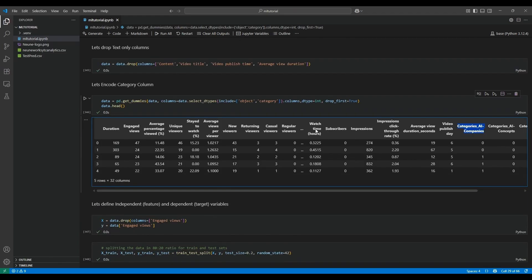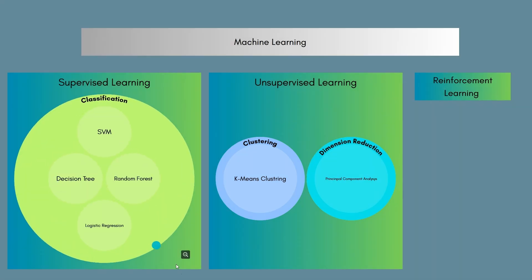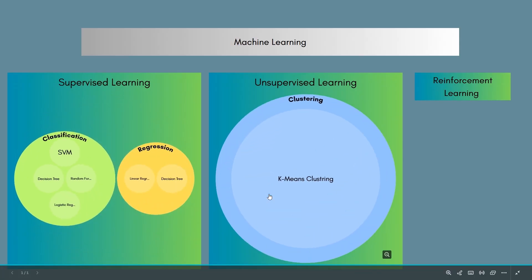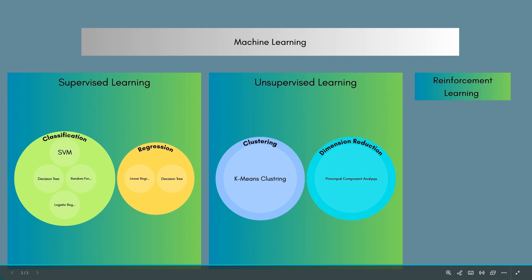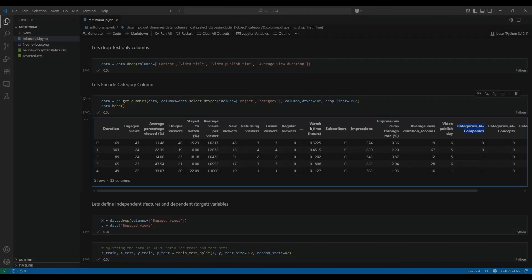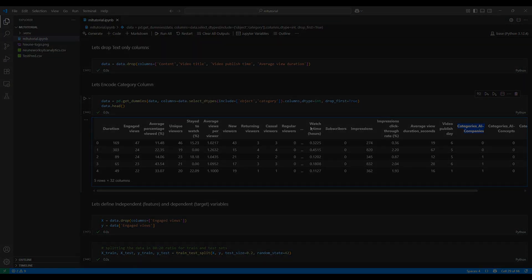Now we are almost done with our data — it's time to choose our model. There are various models in machine learning. On a high level, it is divided into supervised, unsupervised, and reinforcement learning. Supervised learning is further divided into classification and regression. In classification there are models like decision tree, logistic regression, support vector machine, and bagging/boosting models such as random forest, gradient boosting, and XGBoost. In unsupervised learning we have clustering like k-means, and dimensionality reduction like PCA. Out of these models, we have to choose the one that fits our problem and the nature of our data.